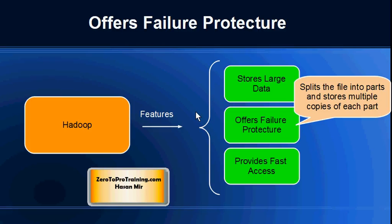To cope with this problem, Hadoop is designed to offer excellent hardware failure protection. It splits the file you are storing in the Hadoop file system into equal parts or pieces, and sends these parts to different computers. Not only that, it makes copies of each part. By default, the number of copies is set to 3, though you can increase or decrease that number. So your file, broken into pieces with each piece copied 3 times, along with all the originals and clones, are spread all over the cluster.